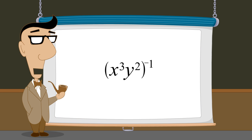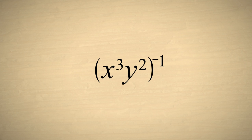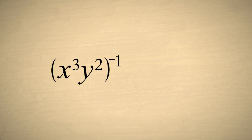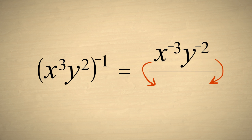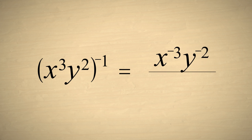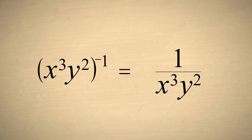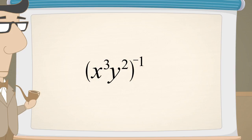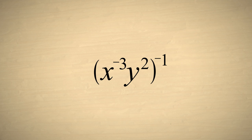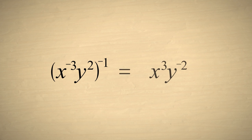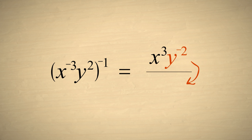Now let's simplify a product of exponential terms raised to a negative power. Multiplying each exponent in the expression by negative one, we get x to the negative three times y to the negative two. If we move these terms to the denominator, we can switch the sign of their exponents to positive. This gives us one over x cubed times y squared. Now let's try the same problem, except we'll make the exponent of x negative. When we multiply the exponents by negative one, we get x to the positive three times y to the negative two. Moving the term with the negative exponent to the denominator, we get x cubed over y squared.